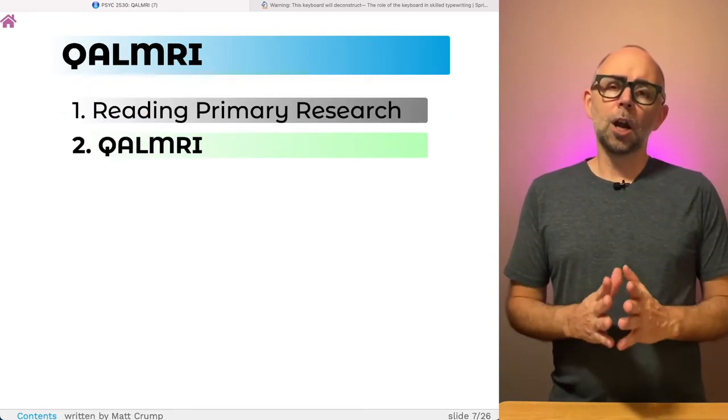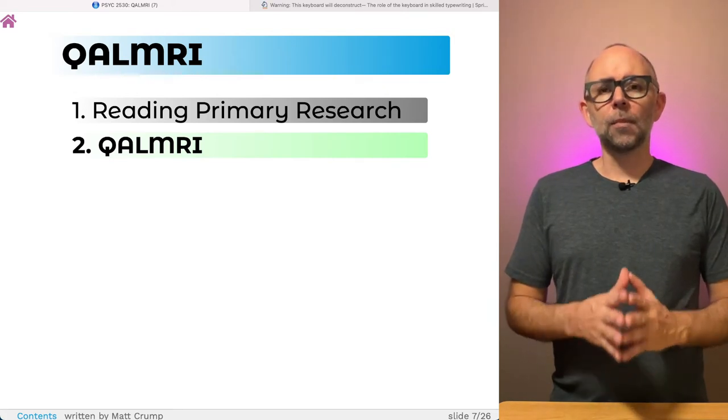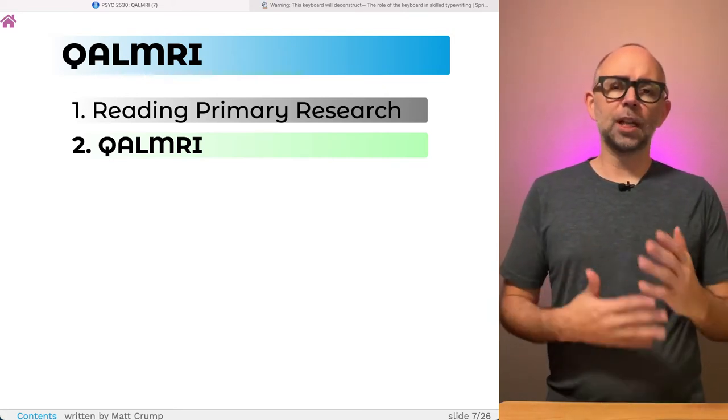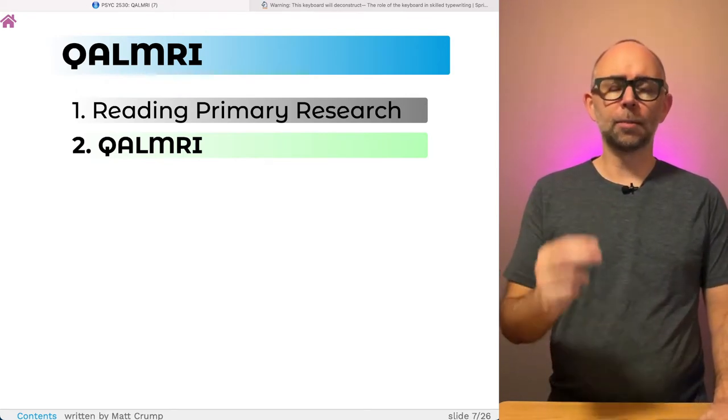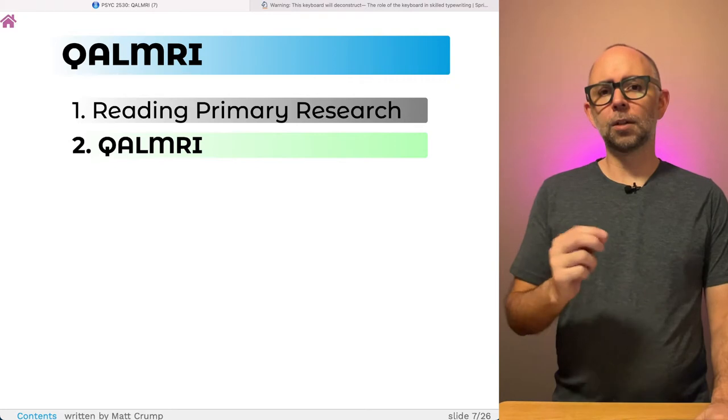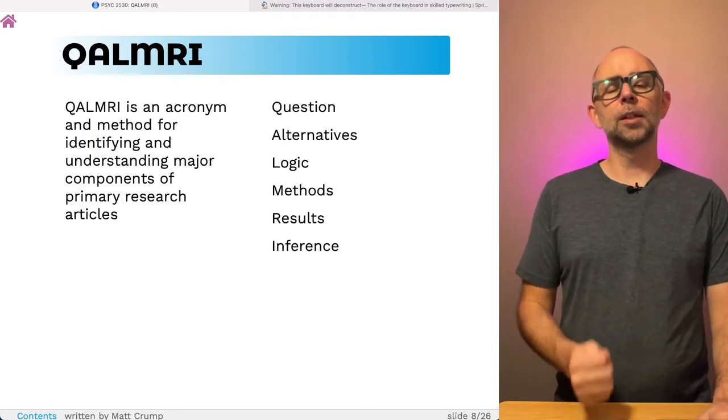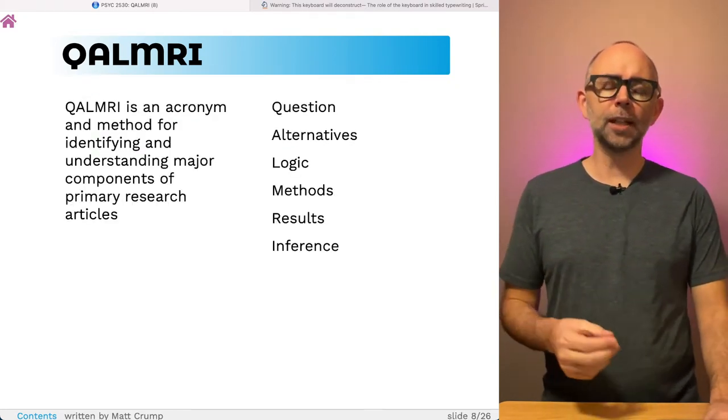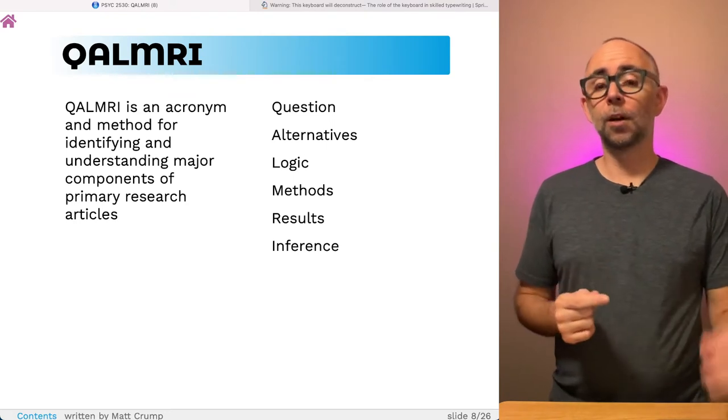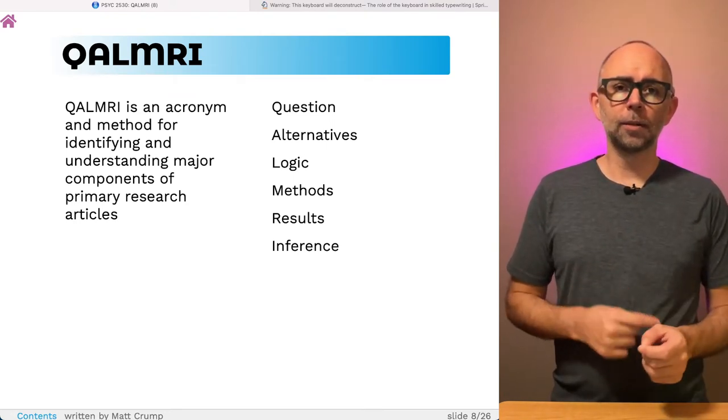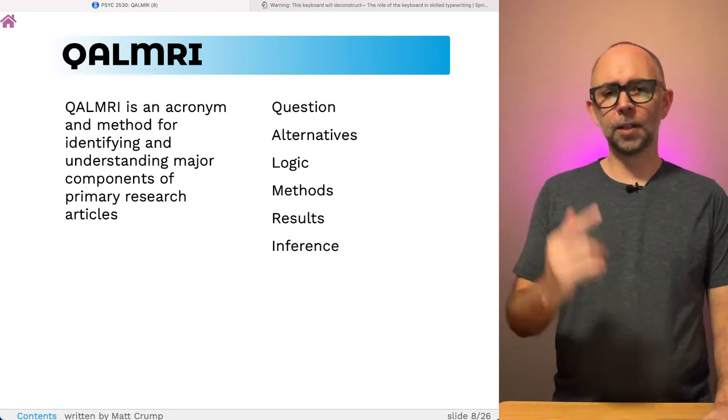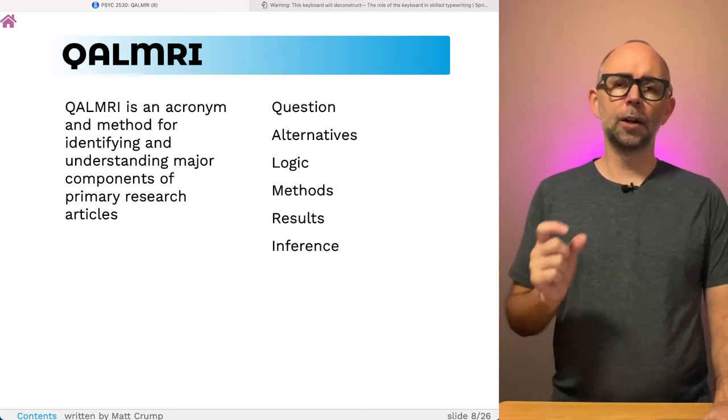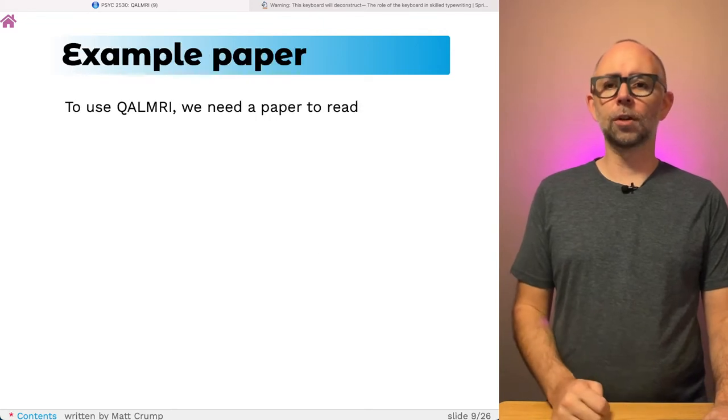We're going to talk about the QALMRI method as a kind of general set of tips for extracting critical components, conceptual components, out of research papers. This is an acronym. It stands for question, alternatives, logic, methods, results, and inference. These are all important pieces of individual research articles.